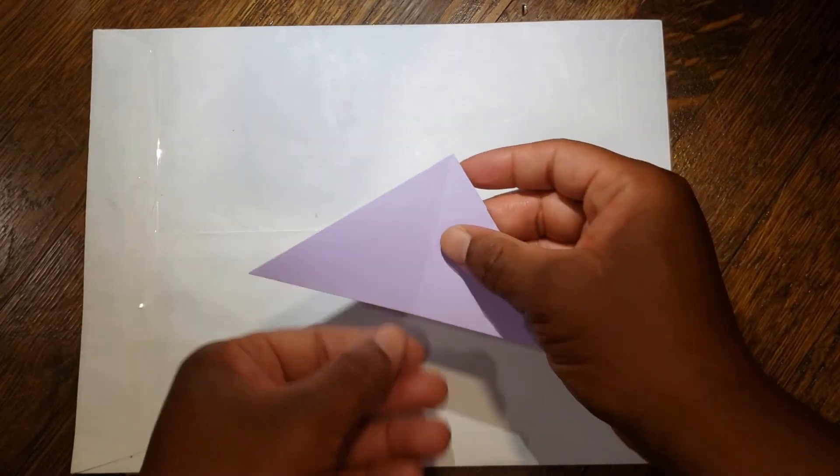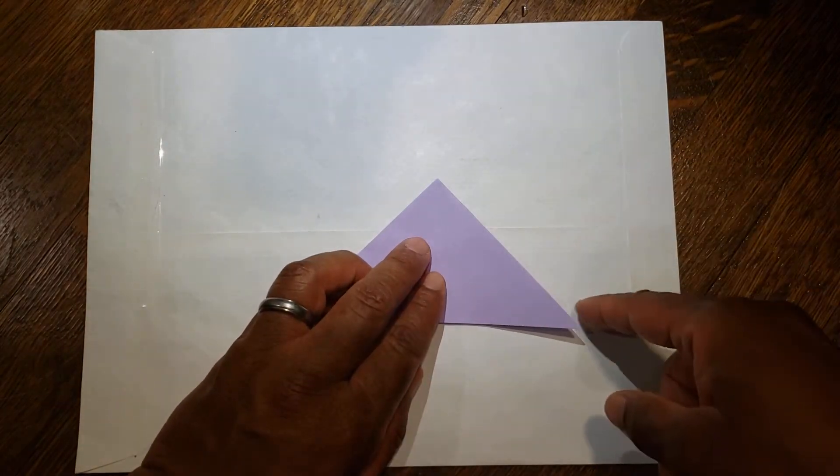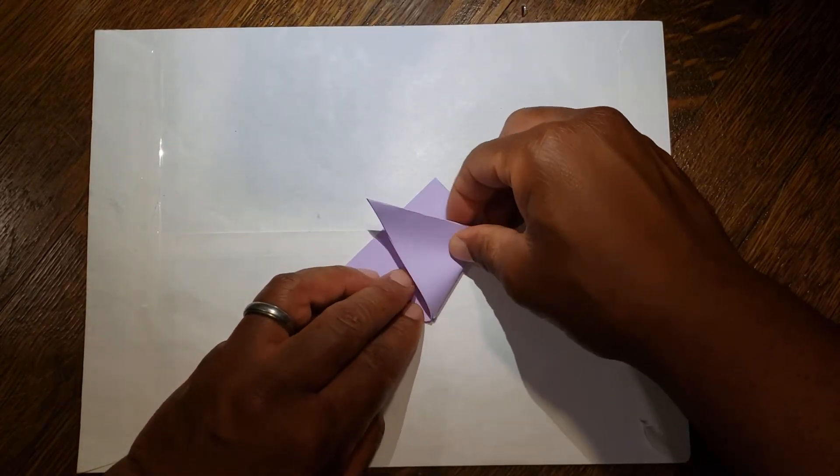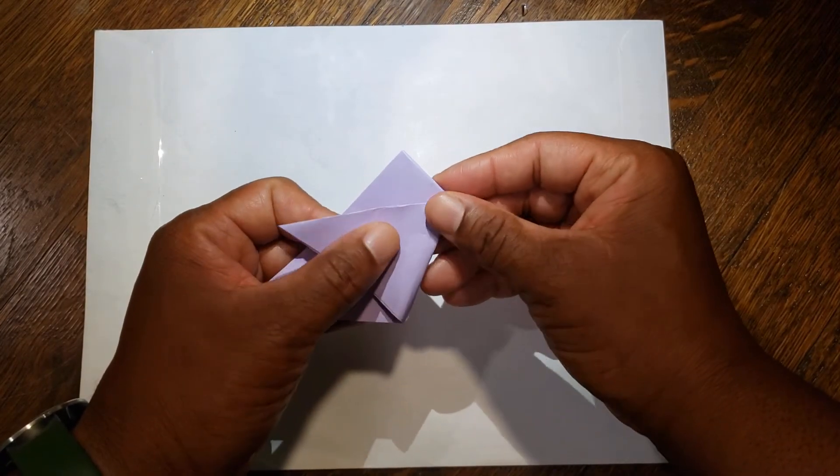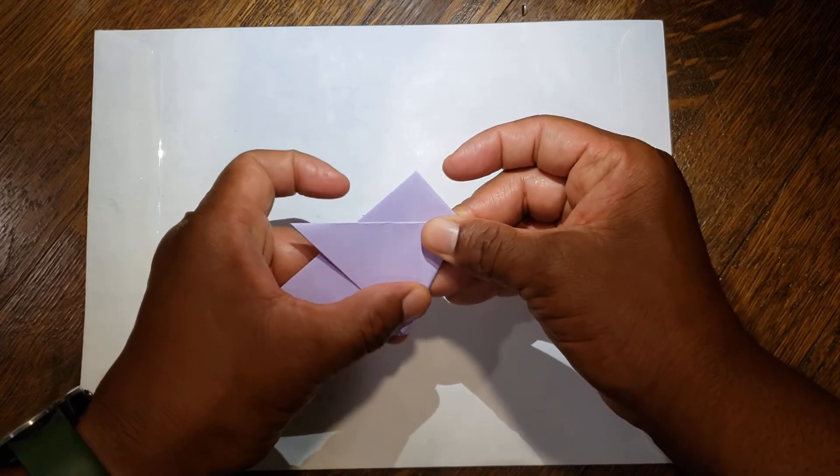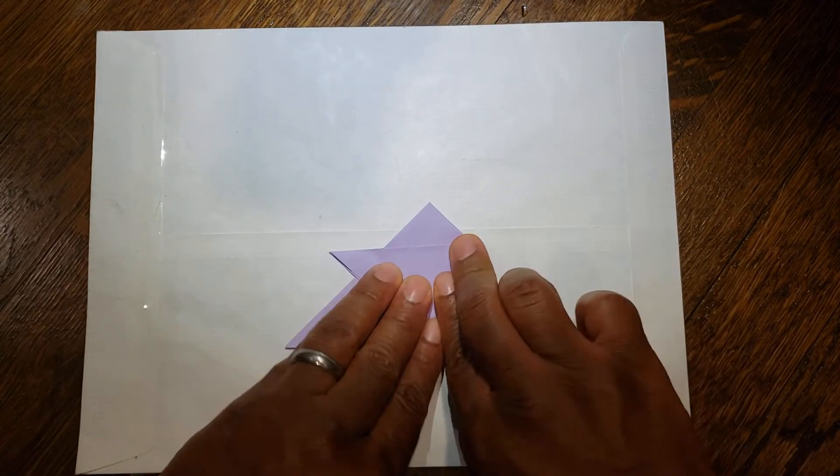Then you're going to flip it over and do the same thing. First, take the right side and fold it over, and it should match what we have underneath. And fold.